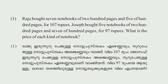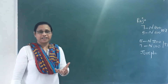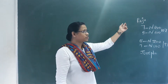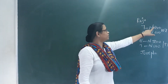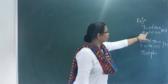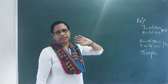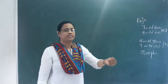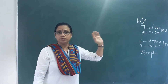Raju bought seven notebooks of 200 pages and five of 100 pages for 107 rupees. This is the question. Raju bought seven notebooks of 200 pages and five notebooks of 100 pages — that adds up to 107 rupees.